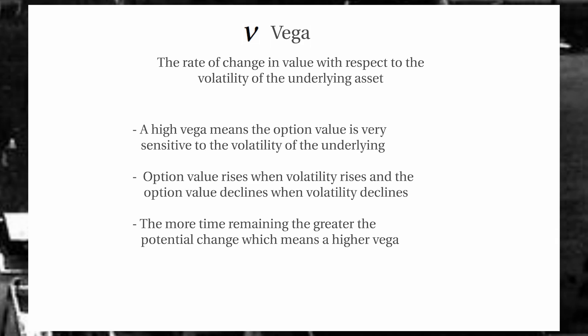Next we have vega, which is not really a Greek letter — that character was chosen because it looks like a V; it's actually nu. What vega represents is the change in option value with respect to the volatility of our stock. A high vega means that our option value is very sensitive and will move around a lot when there is volatility in the stock. Our option value tends to increase when we have an increase in volatility, as volatility is a component of the Black-Scholes formula — as that volatility number goes up, so does the option value.